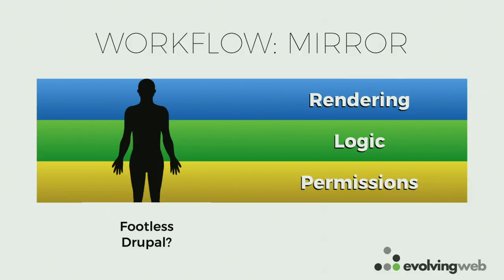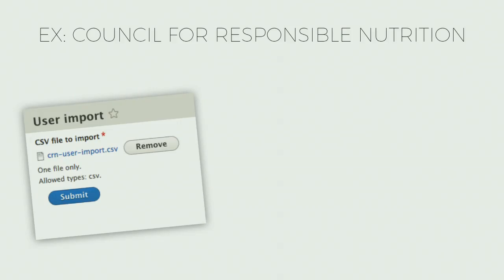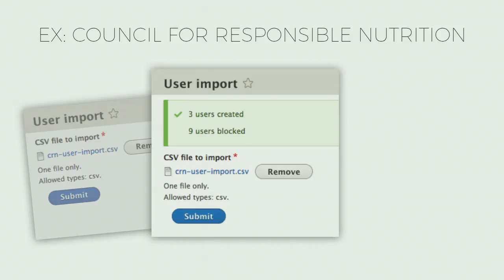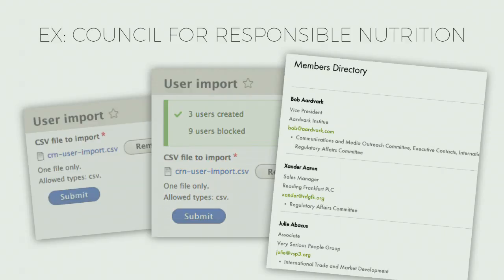We did this sort of thing on a project for a site called the Council for Responsible Nutrition. For these guys, they had some external system that just gave them a giant CSV dump of content. We built them a little form where they could upload their file, submit it, and it would give them a little report: 'We've created a bunch of users, we've blocked a bunch of users that no longer subscribe to your member management system.' And then when somebody would visit the member directory, it would just list all the users — just a normal view. You can't do a view over external content very easily, but because we synced it into Drupal, we can do that and our site builders are happy.